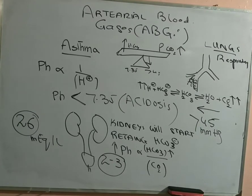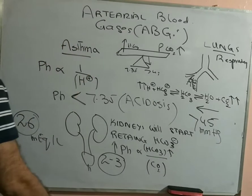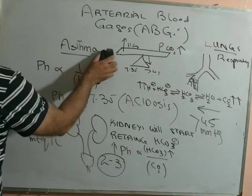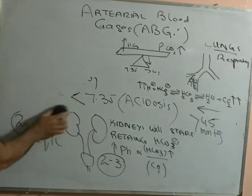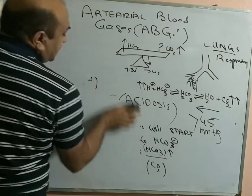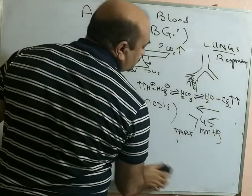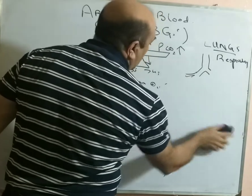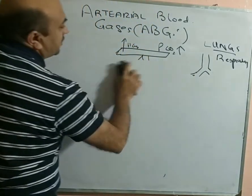Now let's take another example where we are looking at the role of the respiratory and the metabolic limb in the ABGs. For example, we take an example of a patient who is very anxious and has gone into a hysteric attack.